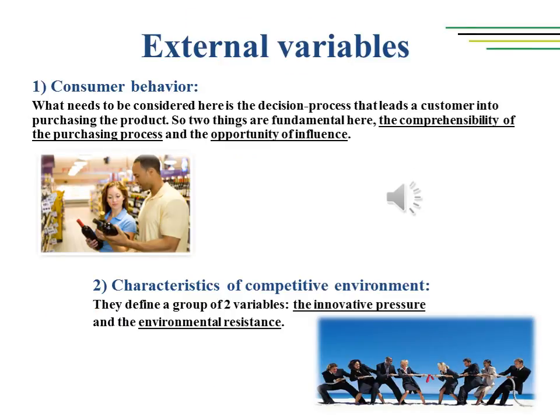The external variables. Consumer behavior defines the first group of variables having a strong influence on marketing activities. What needs to be considered is the decision process that leads a customer into purchasing a product. Two things are fundamental: the comprehensibility of the purchasing process and the opportunity of influence. Comprehensibility of the purchasing process is determined by the availability and number of information. The comprehensibility varies according to time and environment, to the product and the purchase policies. The opportunity to influence depends on factors tied to the purchase process such as the value of the product, the perception of its value, its distribution, its selling capability, the payment methods, promotions, the possible annexed services, all features concerning a specific brand and eventually the price.